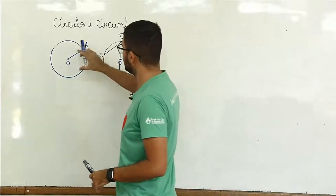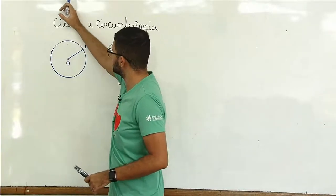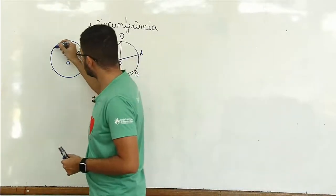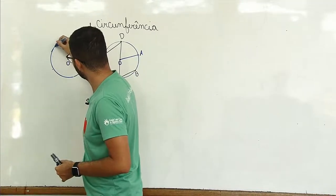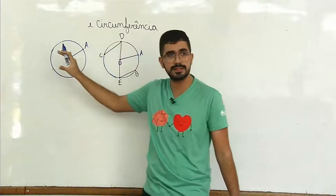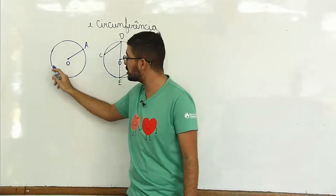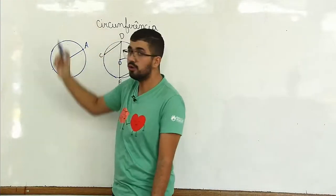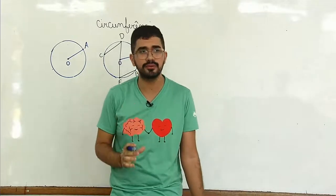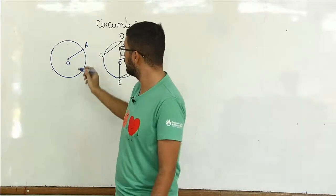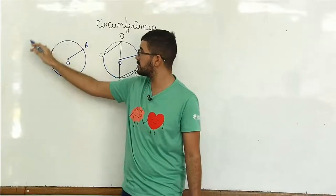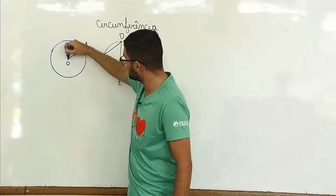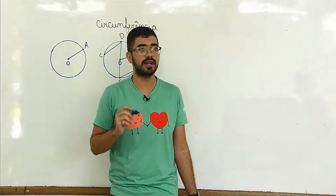Eu fiz dois desenhos; vamos pegar este daqui. Ambos os dois estão tratando de circunferência. Circunferência, sétimo ano, é todo este redor aqui, é todo este contorno que nós temos nesse nosso desenho. É toda essa linha fechada que nós temos. Em uma circunferência nós vamos ter um ponto central, que vai estar no meio da circunferência. Esse ponto central nós vamos chamar de centro.